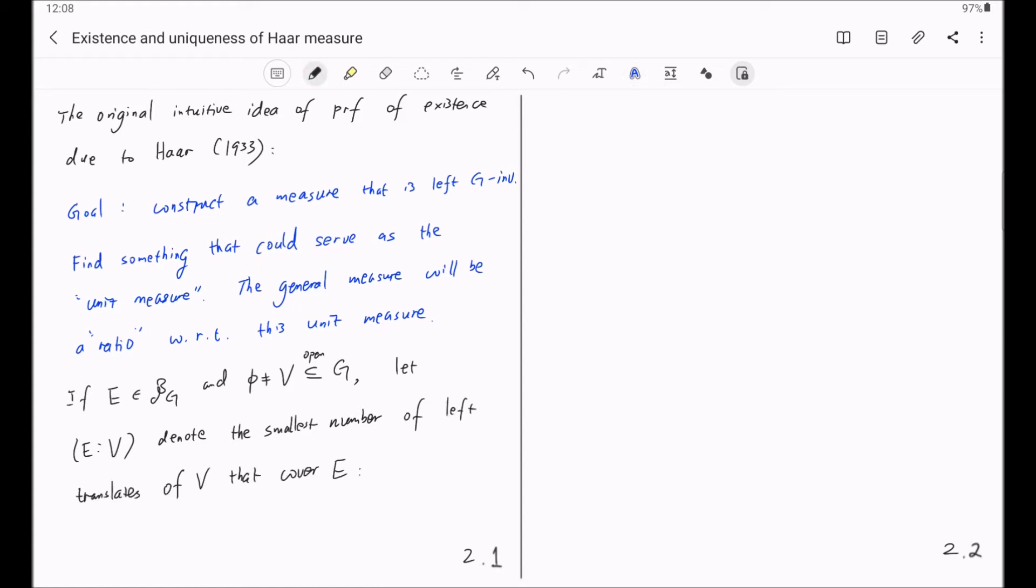Namely, this E:V will be the infimum of the cardinality of the index set I, such that E is contained in the union of x times V, where x ranges over I. And of course, here I is a subset of G.